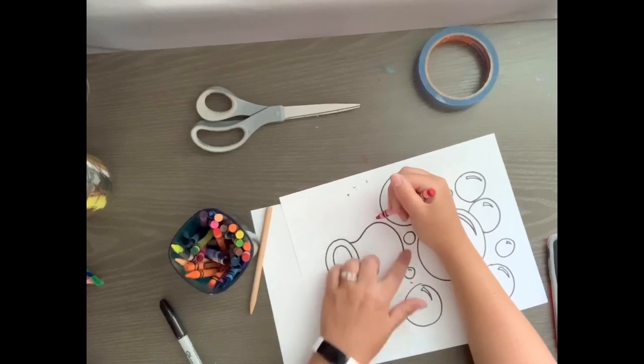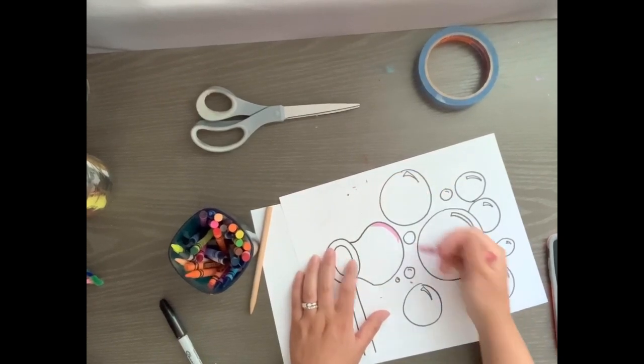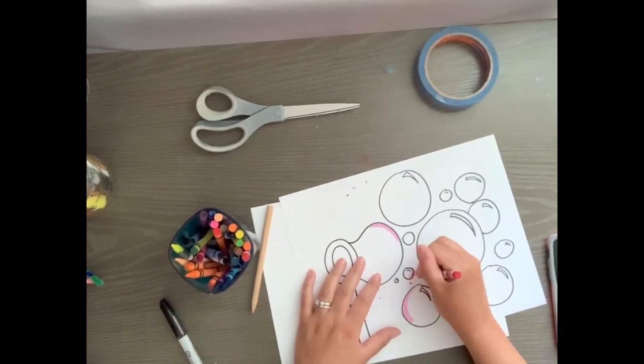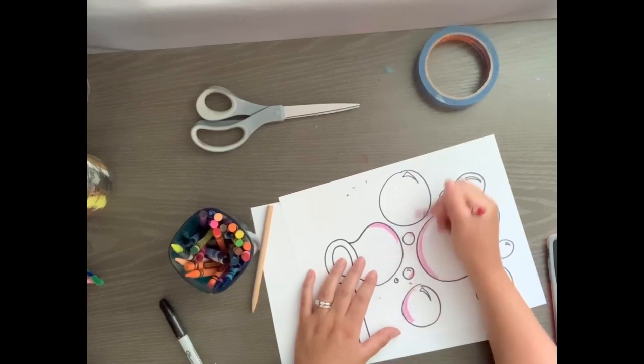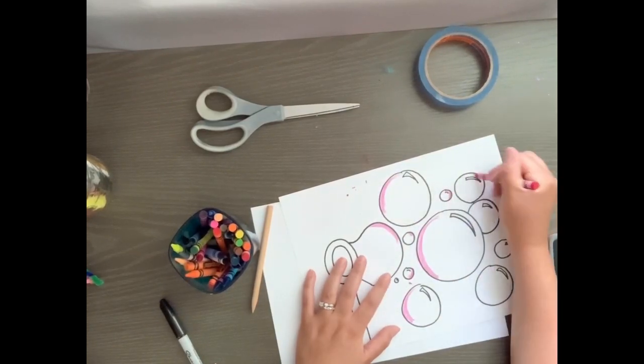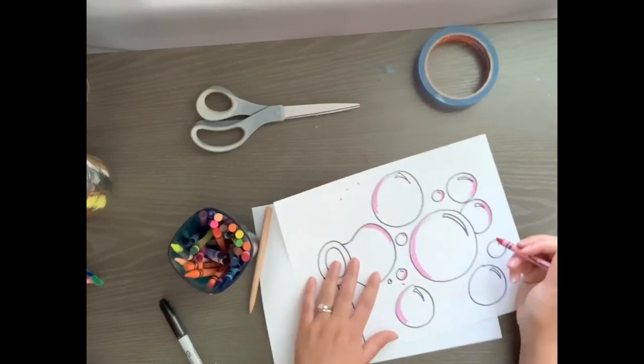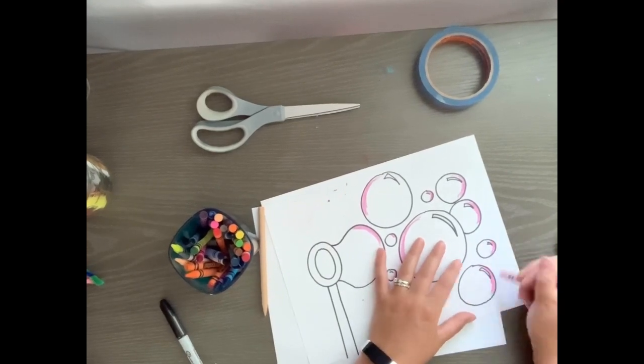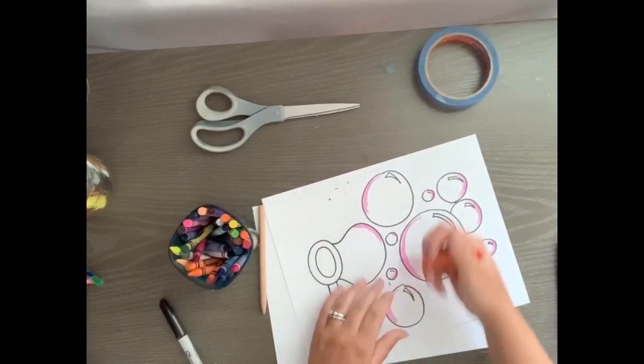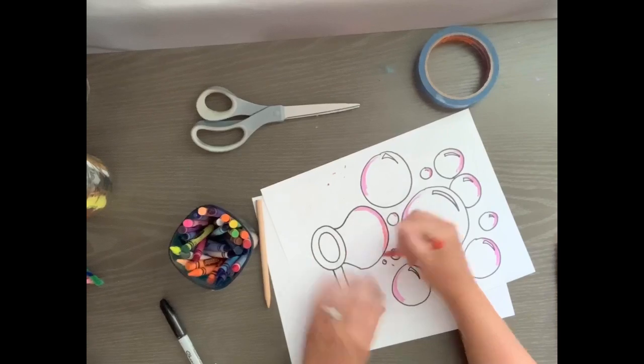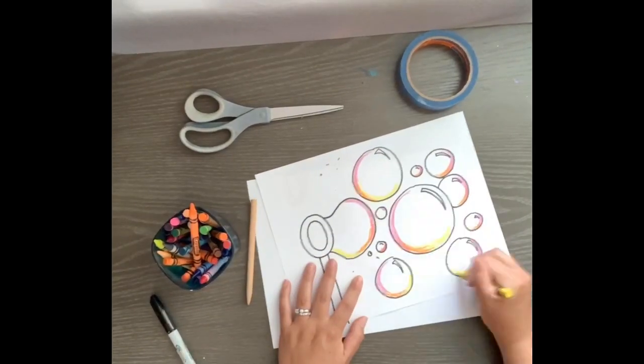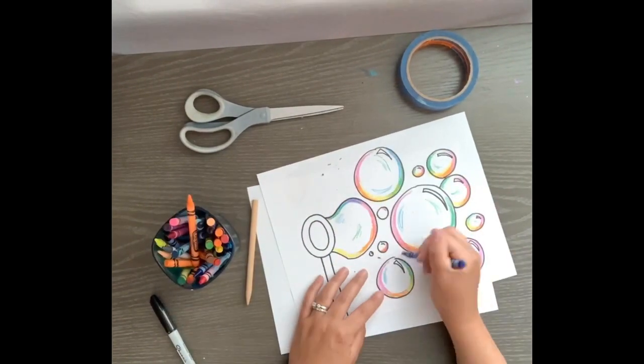Have you ever noticed that when light shines on a bubble it creates a rainbow? That's what we're going to try to create. So what I'm doing is I am coloring on the edges of my bubbles to recreate that. I'm coloring kind of lightly and scribbly. It doesn't have to be perfect. I'm going to speed up the video as I color through all of the colors to make it look like a rainbow.